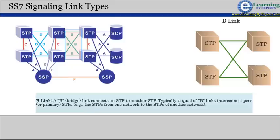Typically, a quantitative B links interconnect peer or primary STPs, for example, the STPs from one network to the STPs of another network.